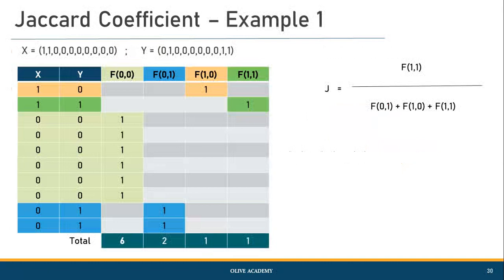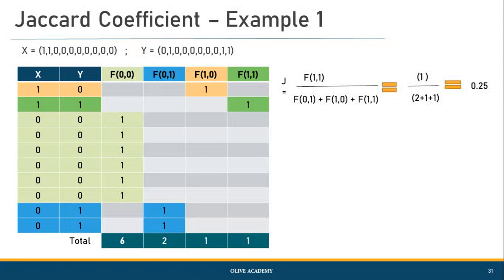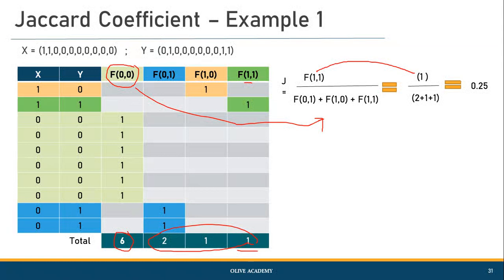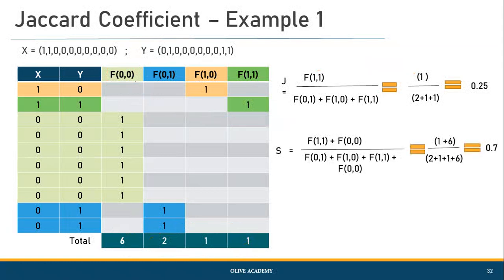Looking at the first toy example and applying Jaccard Coefficient, the value turns out to be 0.25, because f(0,0) is not added anywhere in the formula. We only have f(1,1) in the numerator, which is 1, and the denominator is the sum of f(0,1), f(1,0), and f(1,1). So the Jaccard coefficient is 0.25, whereas Simple Matching Coefficient gave 0.7 — meaning only 25% actual similarity exists, not 70%.